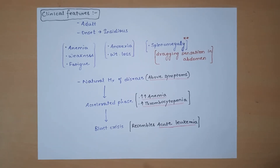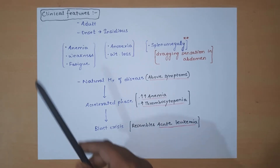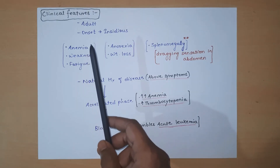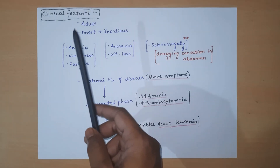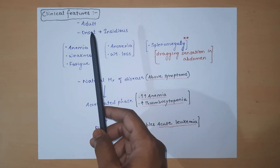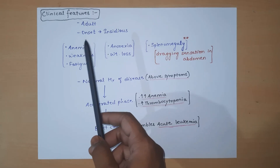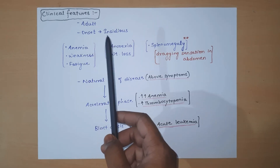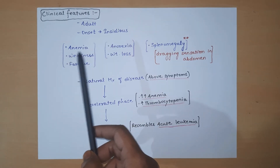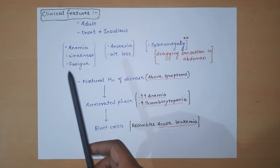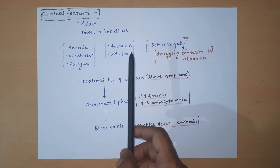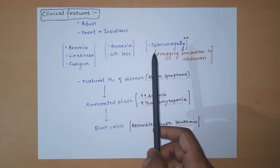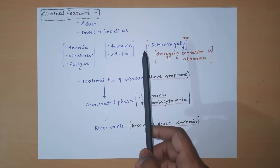The clinical features seen in patients of CML: the patient of CML is generally of adult age group, and because it is a chronic condition, the onset is gradual. Clinical features include anemia, weakness, fatigue, anorexia, and weight loss. The characteristic finding is splenomegaly.